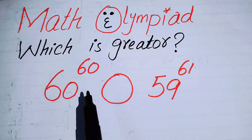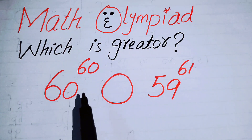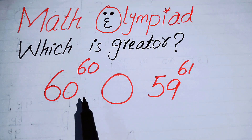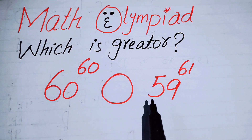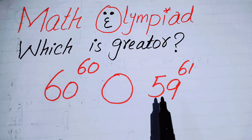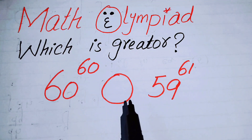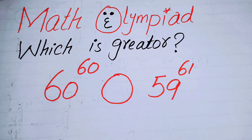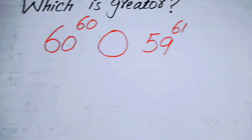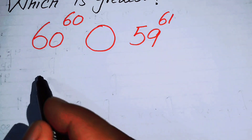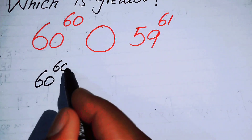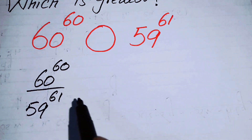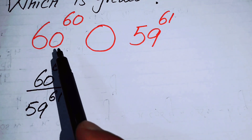Hello everyone, welcome back to the Map of Mathematics. In this video we are going to check which number is greater: 60 to the power of 60, or 59 to the power of 61. The first thing we are going to do is rewrite these two numbers as the ratio 60^60 over 59^61, in order to check which number is greater.